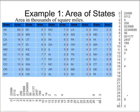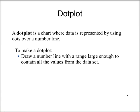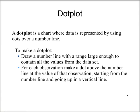Next, let's look at dot plots. To make a dot plot, first I want to draw a number line with a range large enough to contain all the values from the data set. Then for each observation, I'm going to make a dot above the number line at the value of that observation, starting from the number line and going up in a vertical line.